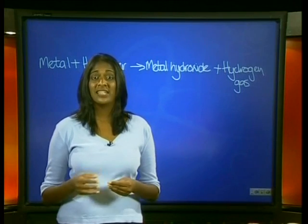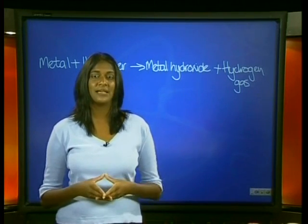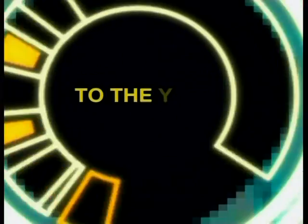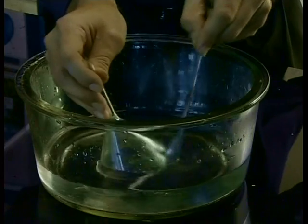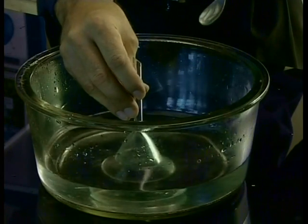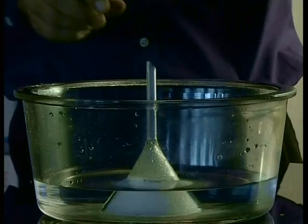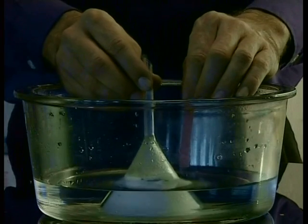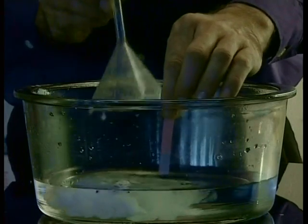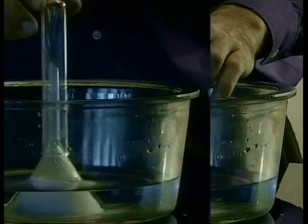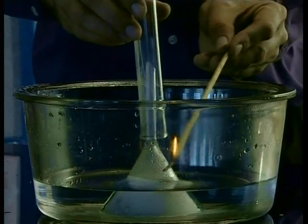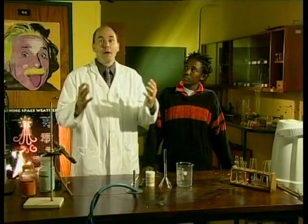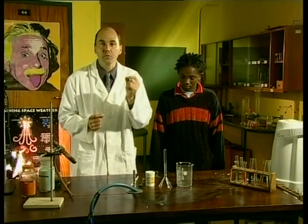Even though the products remain the same even if the temperature increases, you should be asking how can we test for this? We have already seen that if calcium reacts with water at room temperature, it forms a milky white suspension that turns red litmus paper blue, indicating that a basic metal hydroxide called calcium hydroxide is formed during the reaction.